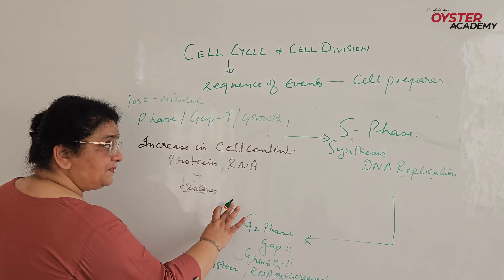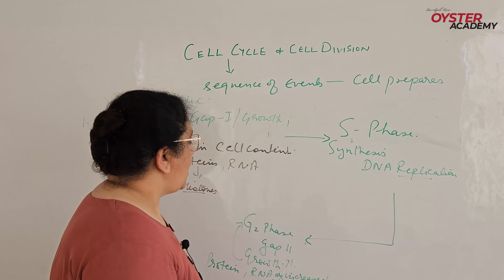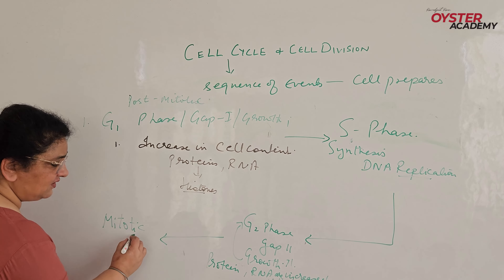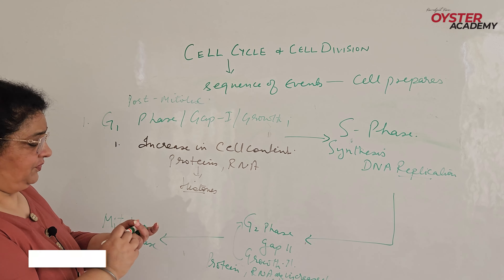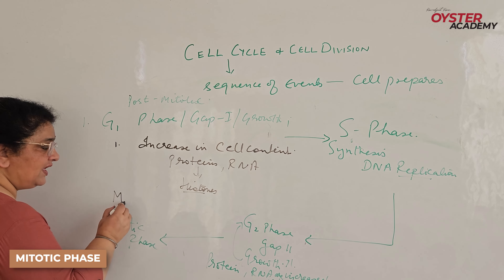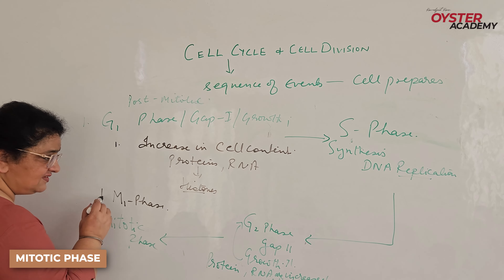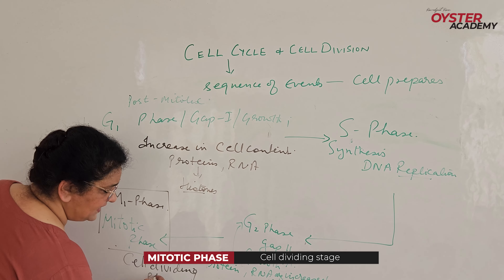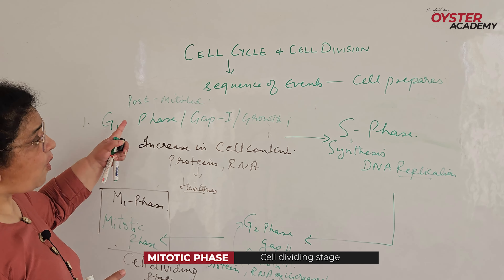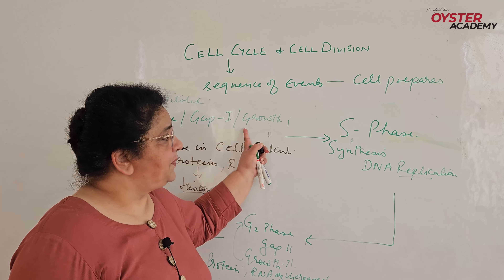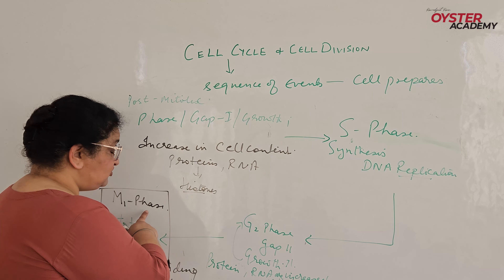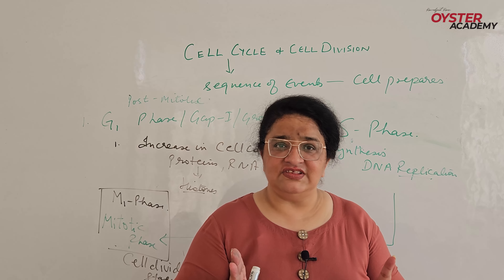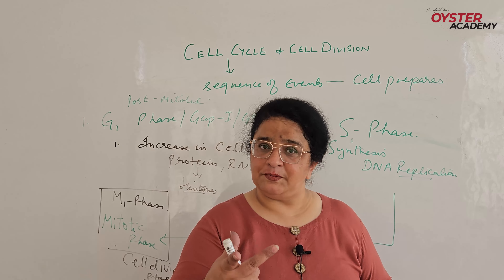After G1, the next phase is the S phase — the Synthesis phase. What happens in S phase? DNA replicates. The term replication means to duplicate — to make one more copy of itself. DNA replicates in S phase, using the RNA and histones that were made in G1 phase. There is no DNA replication in G1 phase; DNA replication only occurs in the S phase, which is the synthesis phase.